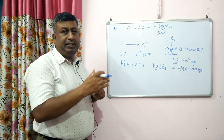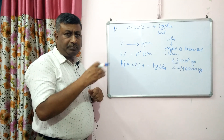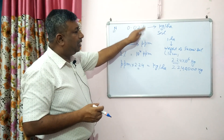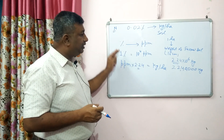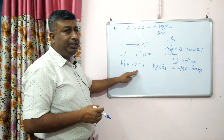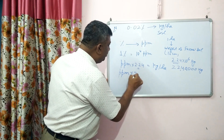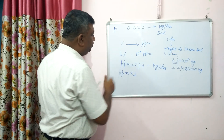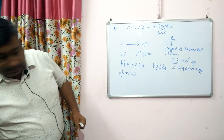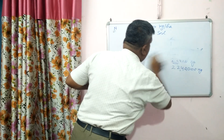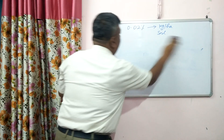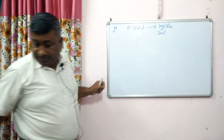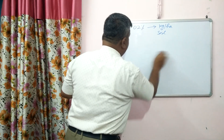There is already a video in the playlist on the relationship between percent and PPM — please watch that lecture to understand the difference between percentage and PPM. So this is the way to convert a nutrient given in percentage into kg per hectare: first convert the percentage into PPM, then multiply that PPM by 2.24, or by 2 for a rough estimation, to get kg per hectare.